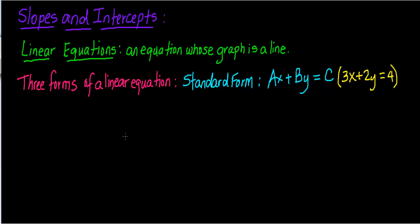We're still in the section talking about slopes and intercepts. Before we continue, I wanted to define what a linear equation is. Since you've seen these on previous tests, a linear equation is an equation whose graph is a line. So if I have an equation and I make a table of values, whatever we graph is going to be a line.